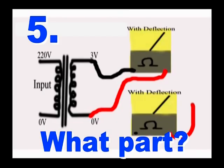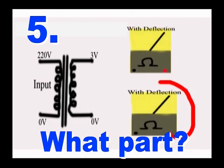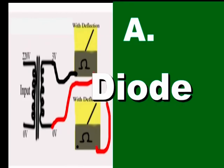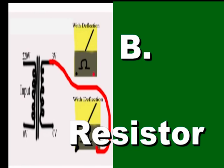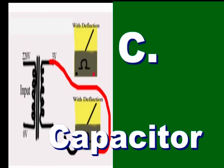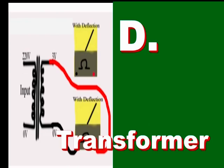Number 5. What part of the power supply is under test? A. Diode, B. Resistor, C. Capacitor, and D. Transformer